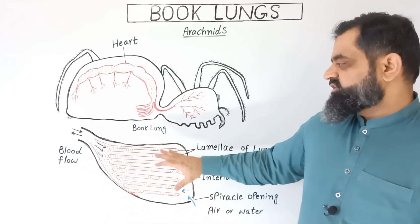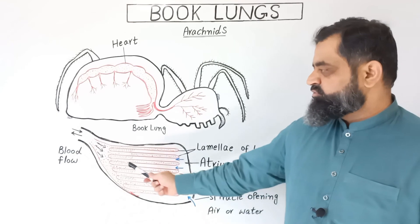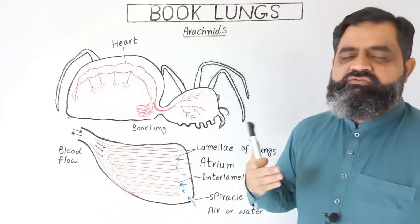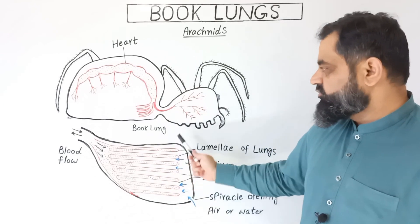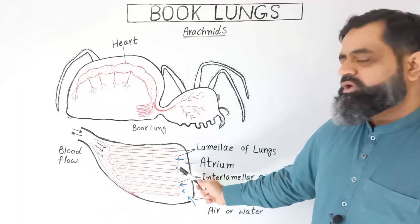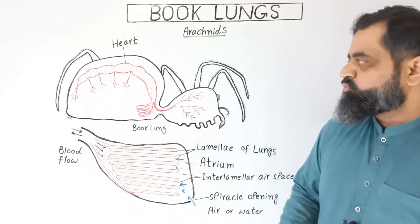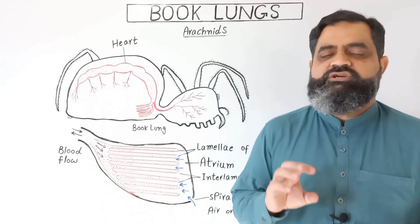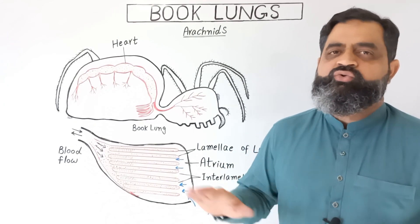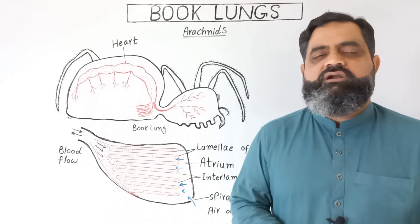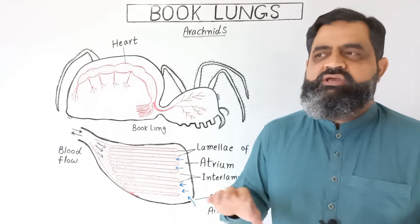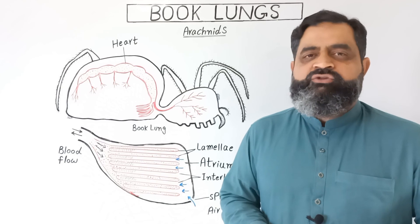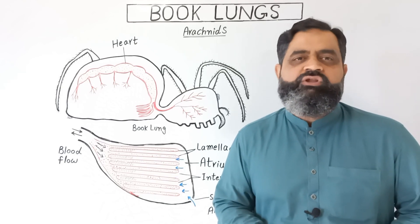This mechanism is also known as the counter-current mechanism. In this way, gaseous exchange takes place. Oxygen diffuses into the blood and is transported to all parts of the body, while waste gases like CO2 are removed from the blood into the air and outside the body. So book lungs are specialized respiratory organs found in insects belonging to phylum arthropoda, and they are known as book lungs because they contain lamellae which look like the pages of a book. That's all for today — hopefully see you in the next lecture.